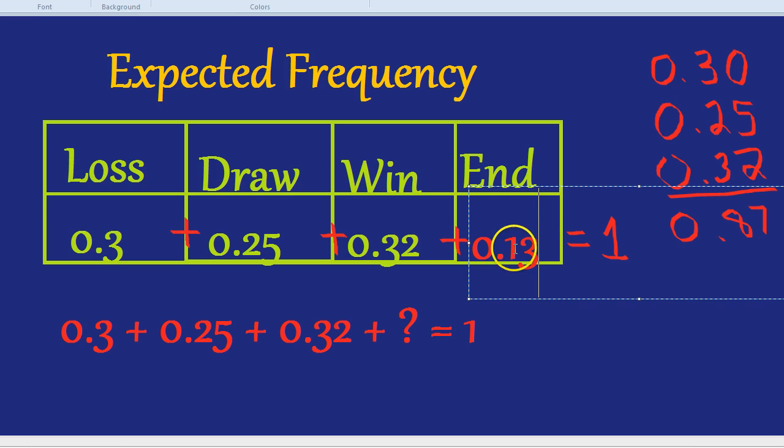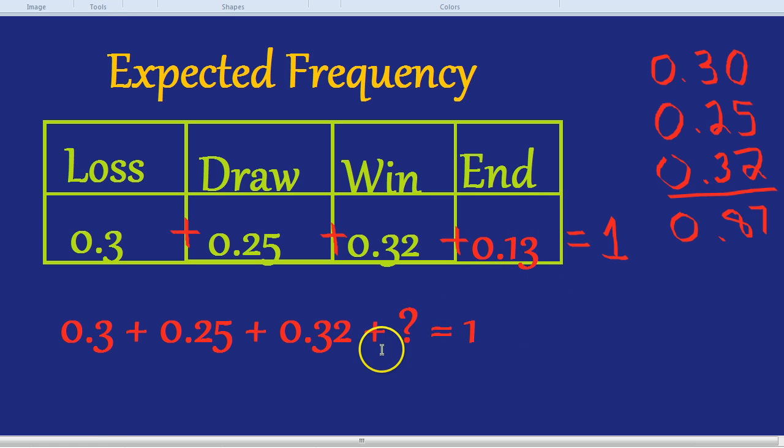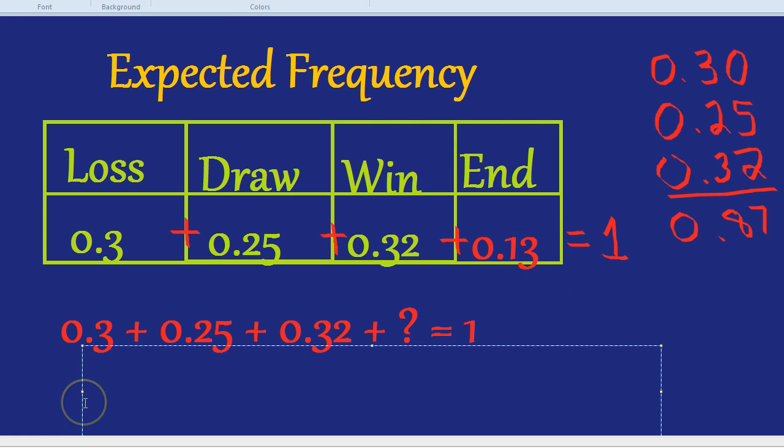But this video is about expected frequency. So the real question is, you're going to play this game 80 times. How many times would you expect it to end prematurely? Now notice I say expect. Things might end way more than usual, or might end way less than usual. You might win way more than 32% of the time. Probabilities just show you roughly how many times you would expect to win or lose.